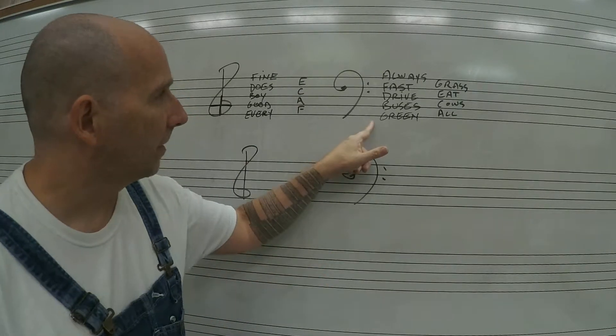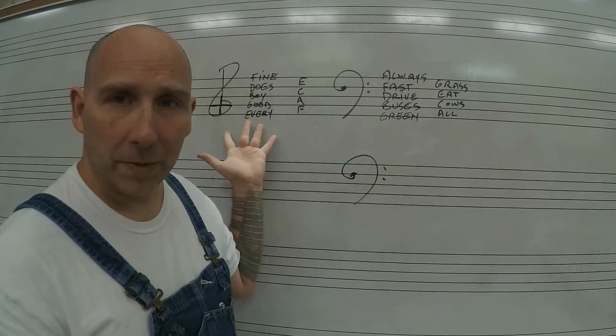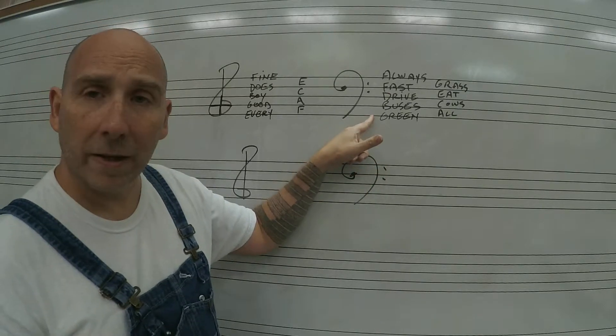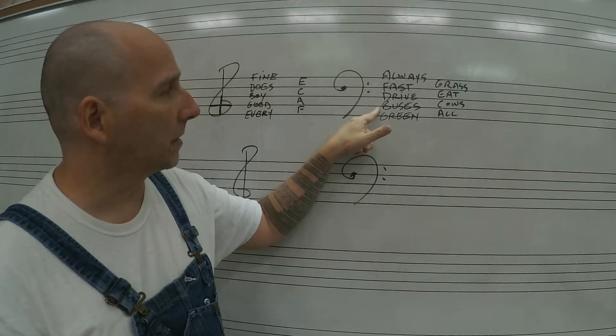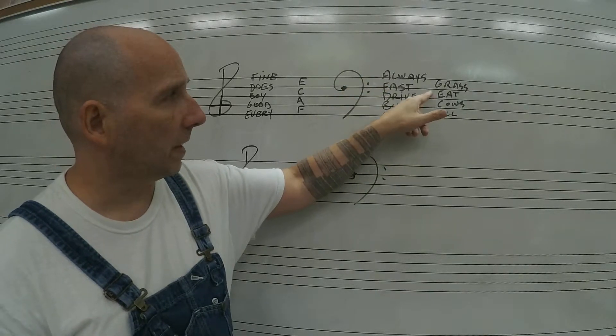On the bass clef I try to use this mnemonic because it's very different from this one. I don't like the two being very similar. So the mnemonic that I use for the bass clef is Green Buses Drive Fast Always. And for the spaces, All Cows Eat Grass.